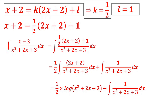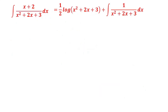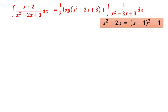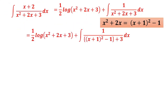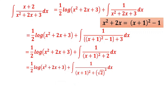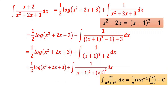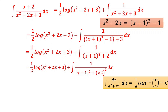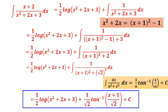The first integral is (1/2)·log(x²+2x+3). For the second, write x²+2x+3 = (x+1)²−1+3 = (x+1)²+2 = (x+1)²+(√2)². Apply the formula 1/(a²+x²)dx = (1/a)tan⁻¹(x/a), with a=√2 and x replaced by x+1. Final answer: (1/2)·log(x²+2x+3) + (1/√2)·tan⁻¹((x+1)/√2) + c.